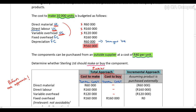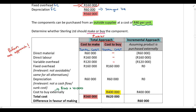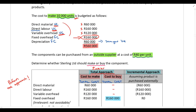Fixed overheads are 160,000 rand. Fixed costs do not vary with production, so whether I make 10,000 units or outsource, my fixed cost remains 160,000 rand — unless the question indicates otherwise, such as saying the company won't need to rent the factory anymore. In this question it's silent, so the fixed cost of 160,000 rand must be included in the cost to buy.